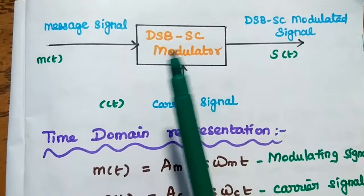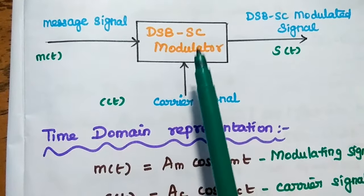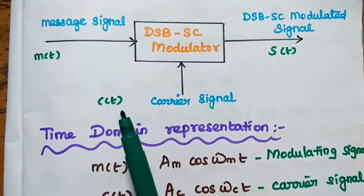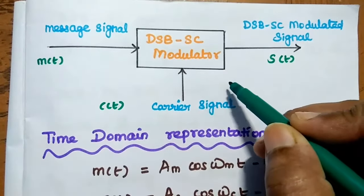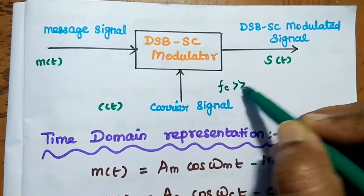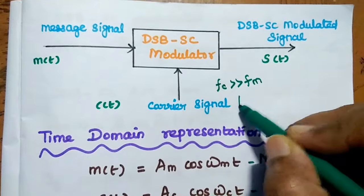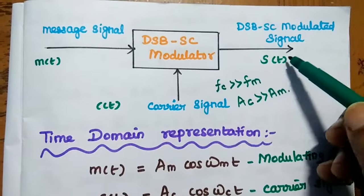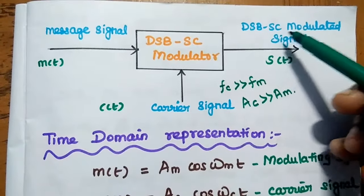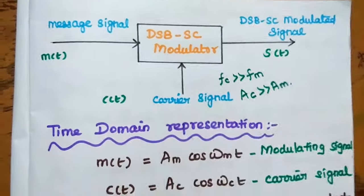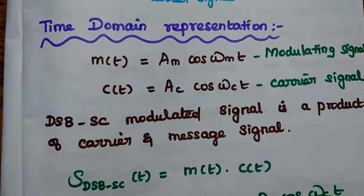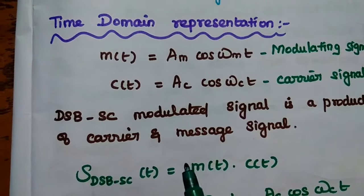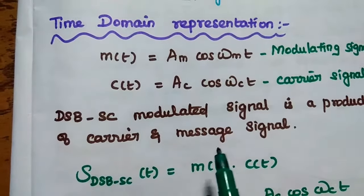This is the diagrammatic representation of the double sideband suppressed carrier modulator. Message signal is given, denoted as M(t). Carrier signal is denoted as C(t). The same conditions are used here: carrier frequency should always be greater than modulating frequency, and carrier amplitude should always be greater than modulating amplitude. Here we can get the double sideband suppressed carrier modulated signal. Next, we are going to represent the signals in terms of time domain and derive the DSB-SC amplitude modulated wave.